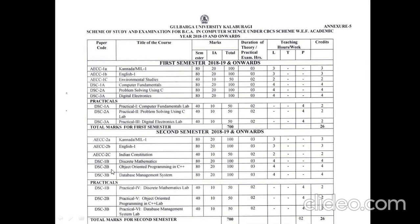DSC2B is Object-Oriented Programming in C++ — 80 external, 20 internal, total 100 marks. DSC3B is Database Management System (DBMS) — 80 external, 20 internal, total 100 marks. For practicals: Practical 4 is Discrete Mathematics Lab, Practical 5 is OOP in C++ Lab, and Practical 6 is Database Management Lab, each for 50 marks (40 external, 10 internal). Total second semester marks are 700 and 26 credits.